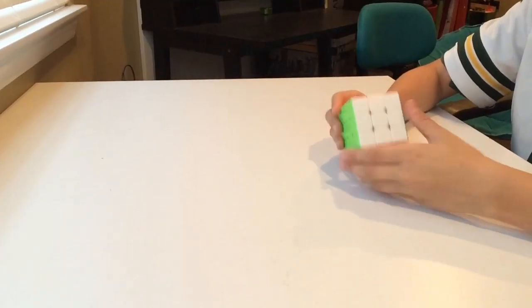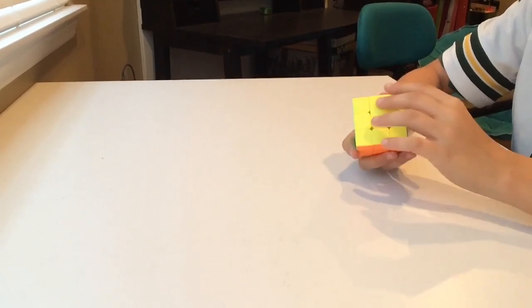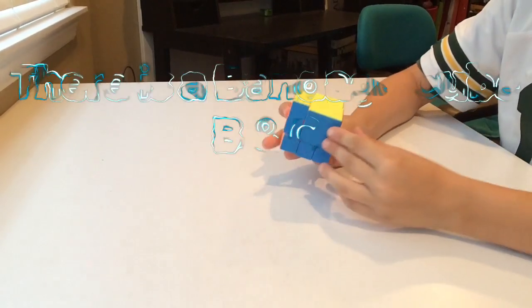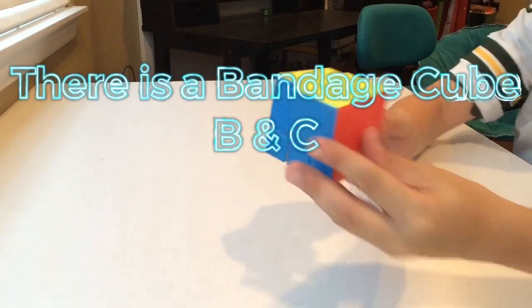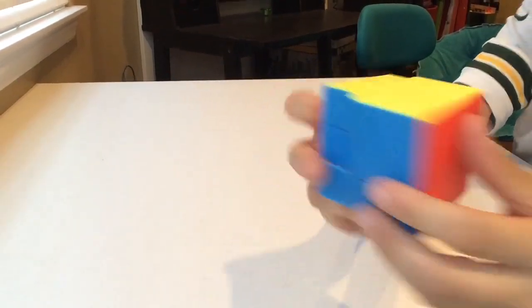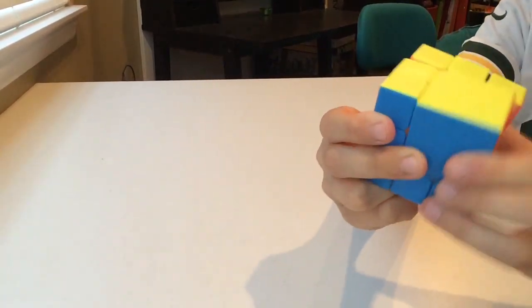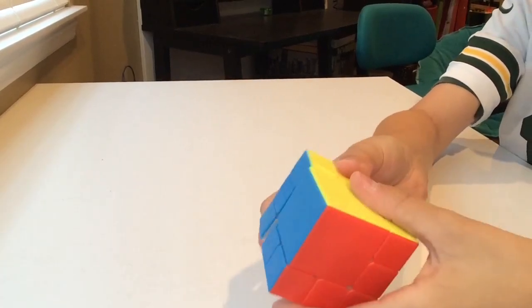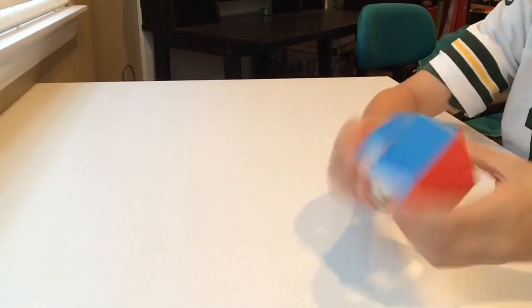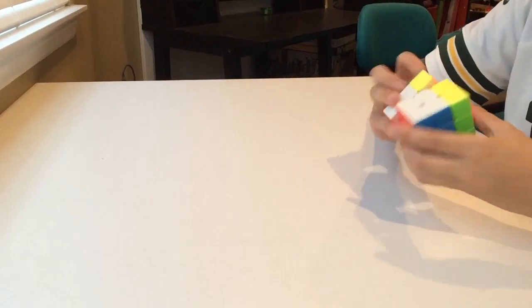So this is the Z cube bandage 3x3 A. So as you can tell, a whole bunch of the cube is bandaged, so you can't make turns like this, or this. But you can turn 3 faces.